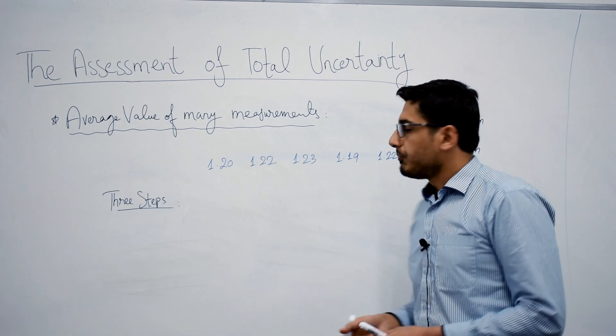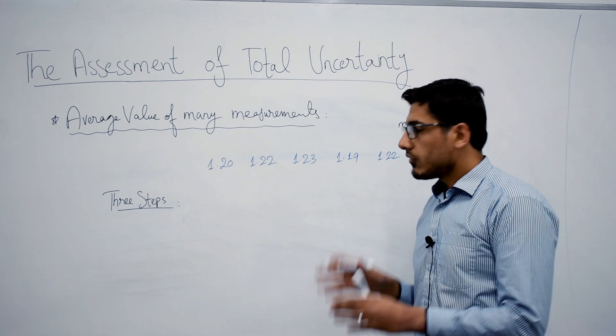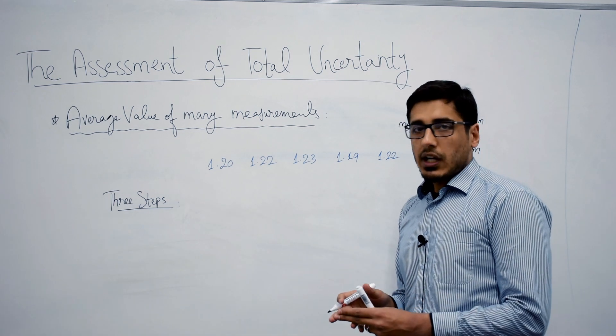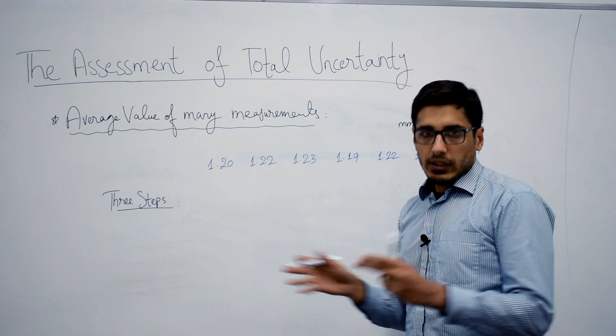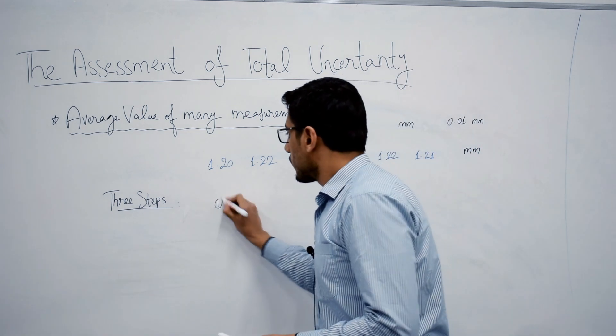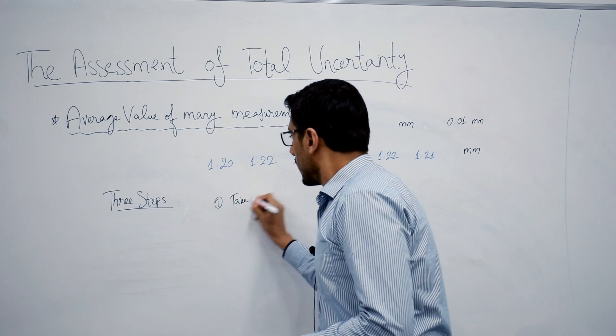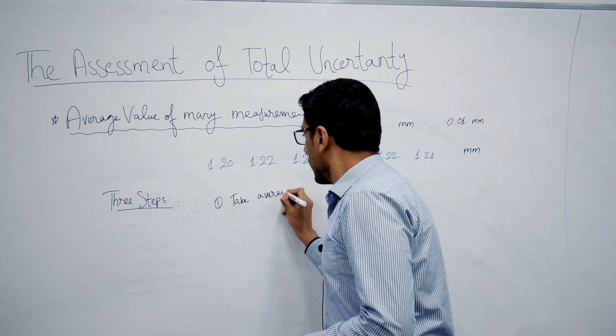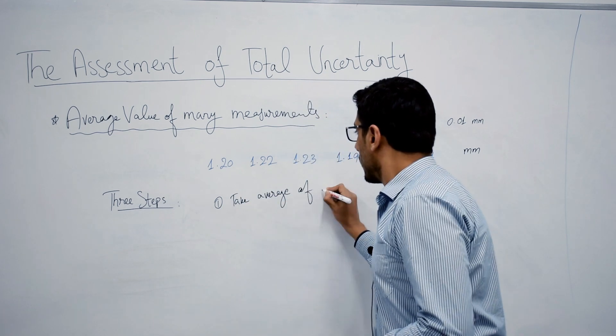Let's do that. There are three steps. First of all, the first step is that you need to take the average of all the measurements that you have taken. So in the three step process, first one is take average of measured values.